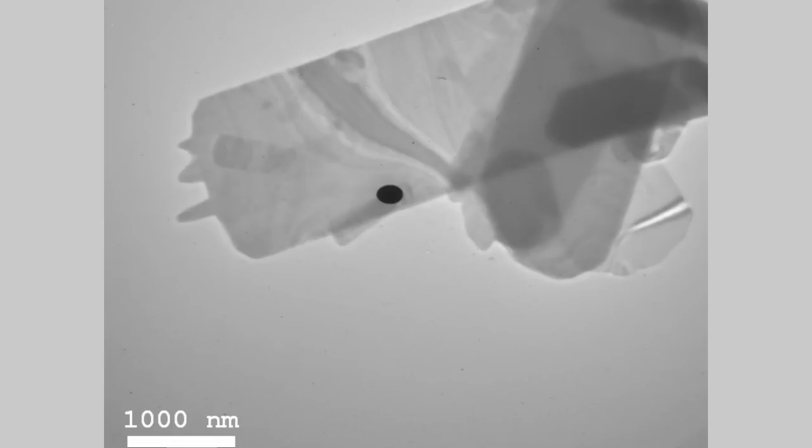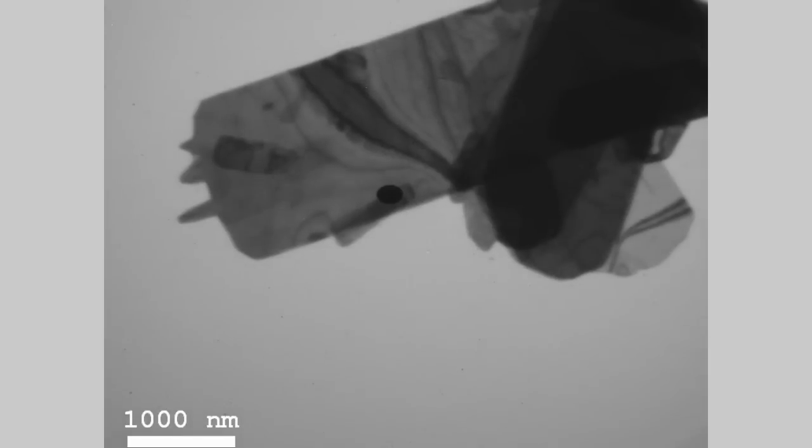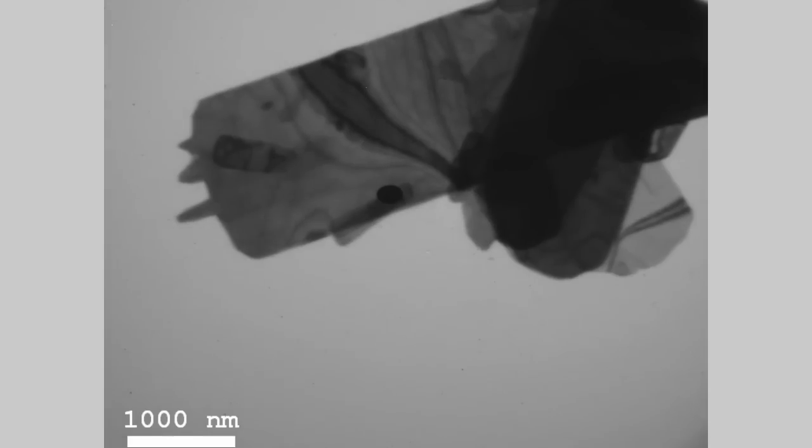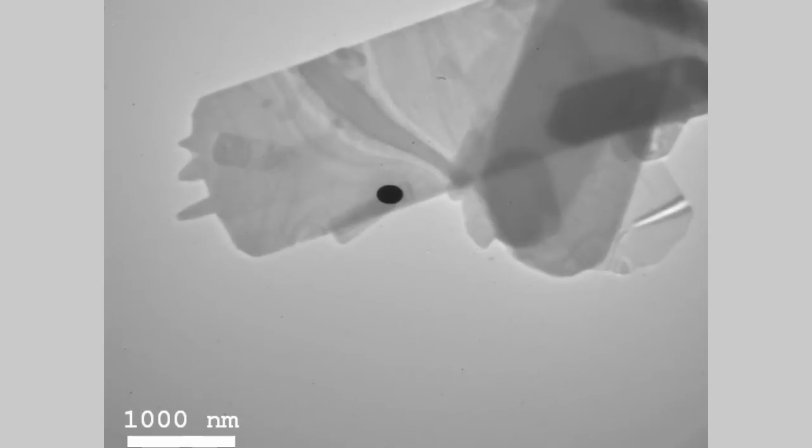I told you that the contrast in the image could be enhanced by putting in the objective aperture. We can try that. You see? The black things become more black. That means that the electrons that were deflected in the sample now have been filtered completely away and it never hits the fluorescent screen. You can increase or reduce this effect by choosing different sizes of the aperture. And then we are back at the beginning.